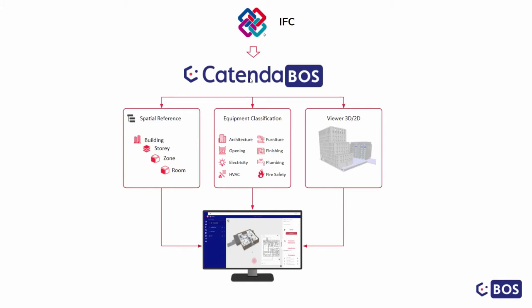How do we do that? As with everything we do at Catenda, we rely on open standards. We use IFC models that the client will provide, and thanks to Catenda BOS we use these IFC models to build three main things. First, we keep the spatial references from your models and your project — so we store and organize things around buildings, stories, eventually zones if you have some, and rooms. That is the granularity we use.